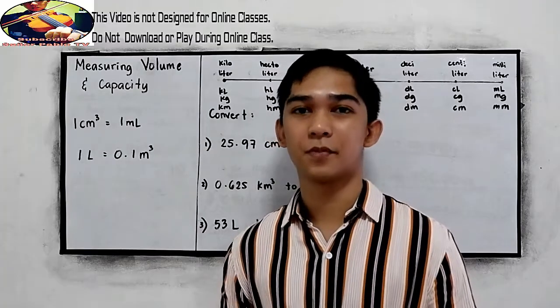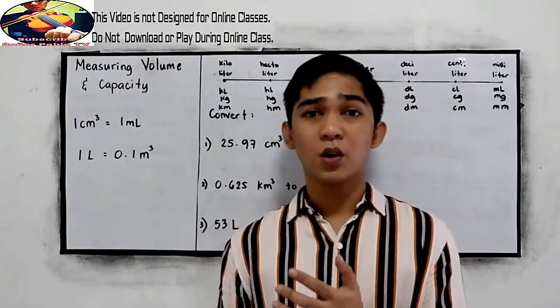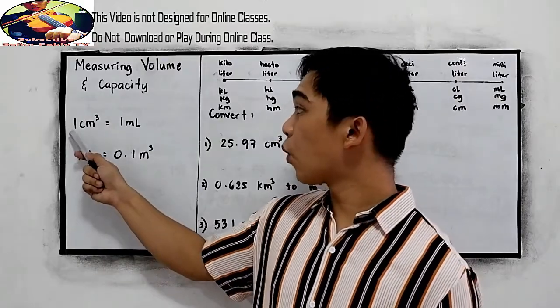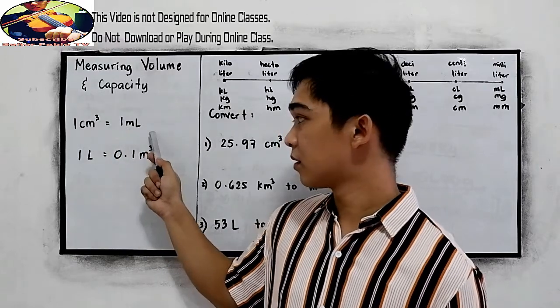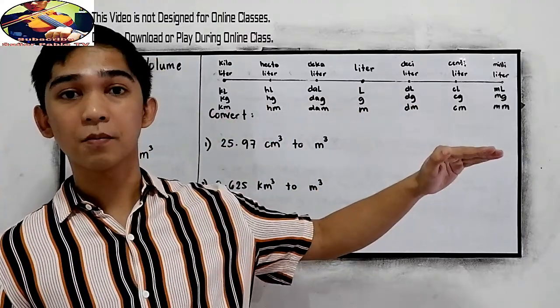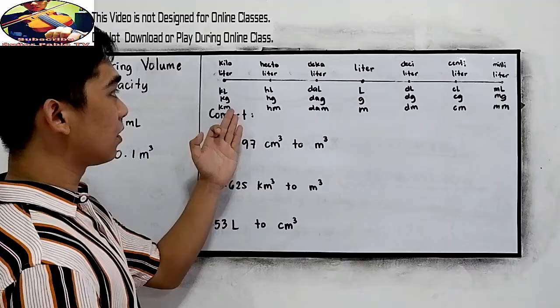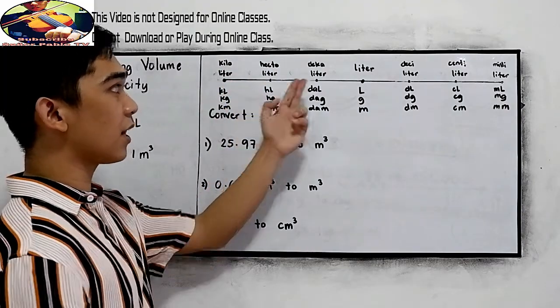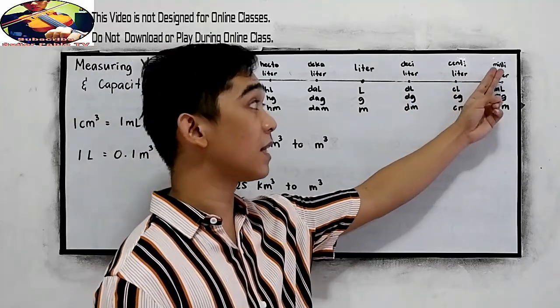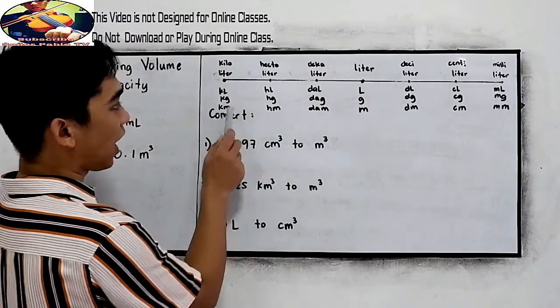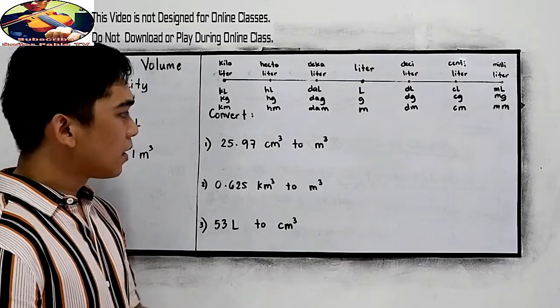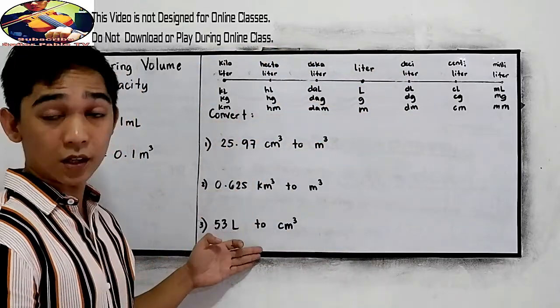Measuring volume and capacity. When we say volume, we will be dealing with the cube, or exponent, or the raised to 3. That's why in our basic conversion, 1 cm³, that is equal to 1 milliliter. And 1 liter is equal to 0.1 liter cube. And of course, we have our conversion table. We have kiloliter for KL, hectoliter for HL, decaliter for DAL, liter for L, deciliter for DL, centiliter for CL, and milliliter for ML. We're going to use this table to answer numbers 1, 2, and 3.